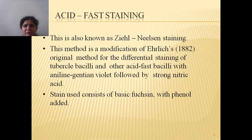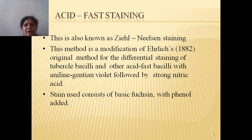The next type of differential staining is the acid-fast staining, also known as the Ziehl-Neelsen staining. This method is a modification of the Ehrlich method, which was used for the differentiation of acid-fast and non-acid-fast bacteria. In this case also, we are making the use of two stains: carbol fuchsin and methylene blue.